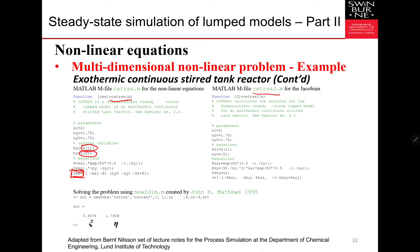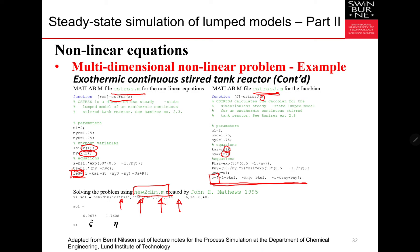The function CSTRJ is for the Jacobian matrix. It also takes input X with two components and returns the Jacobian matrix values. Once we have both functions — one defining the nonlinear equations and one defining the Jacobian — we can use the newtondim MATLAB code created by John H. Matthews, which implements the Newton-Raphson method. It requires: the nonlinear equation function, the Jacobian function, an initial guess for dimensionless concentration and temperature, a tolerance value, and a maximum number of iterations.